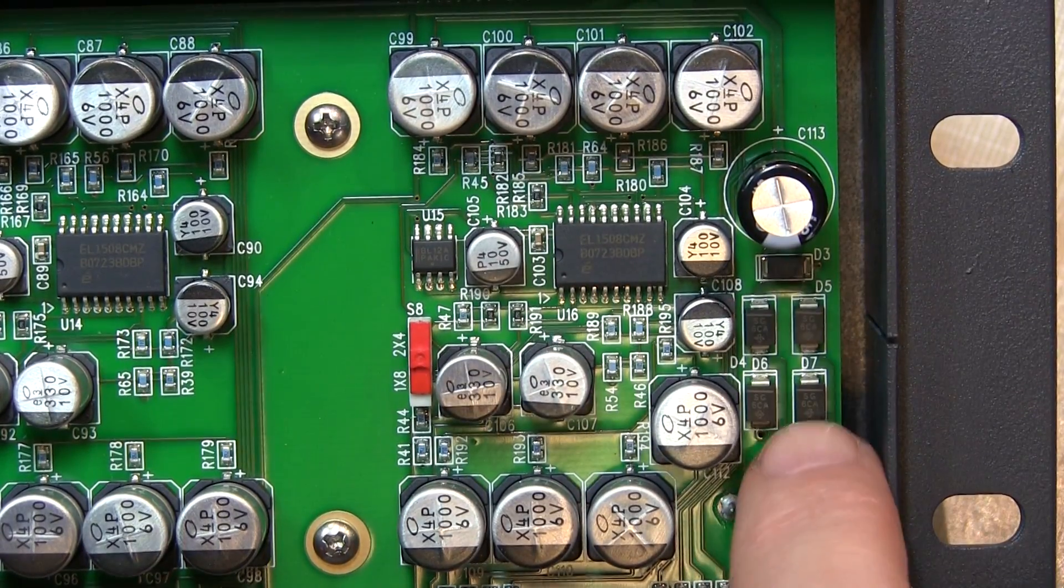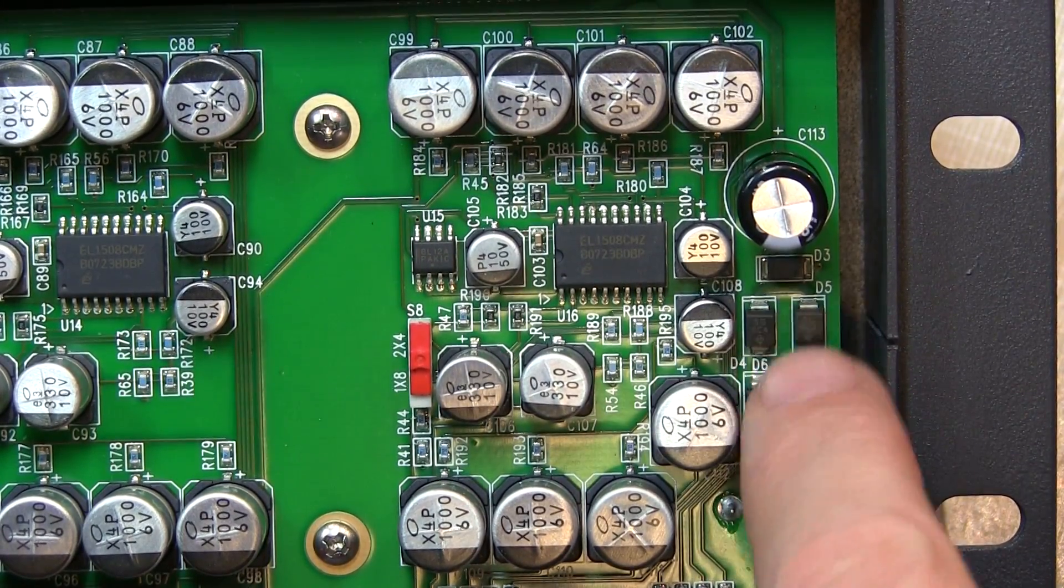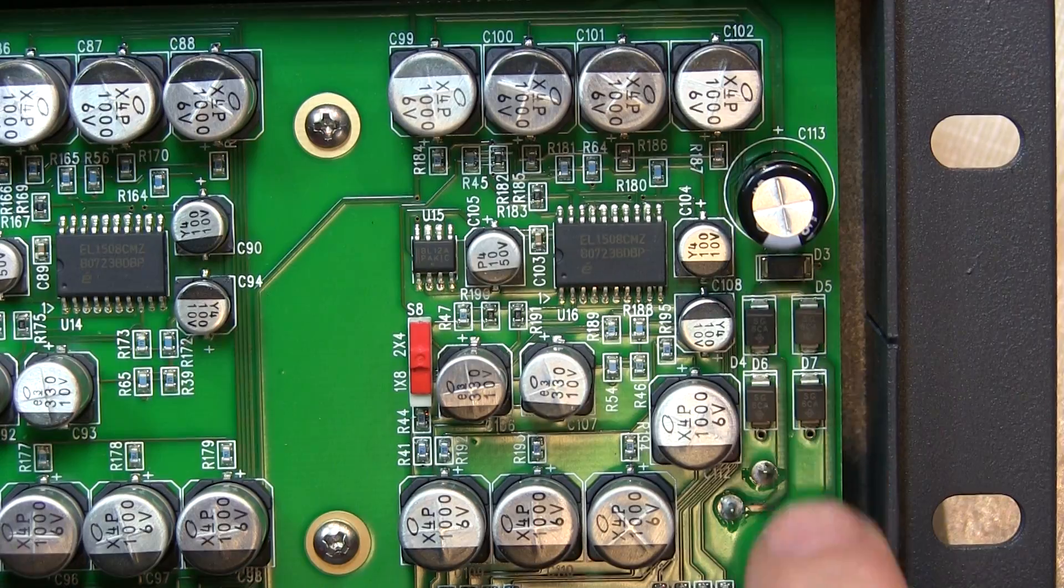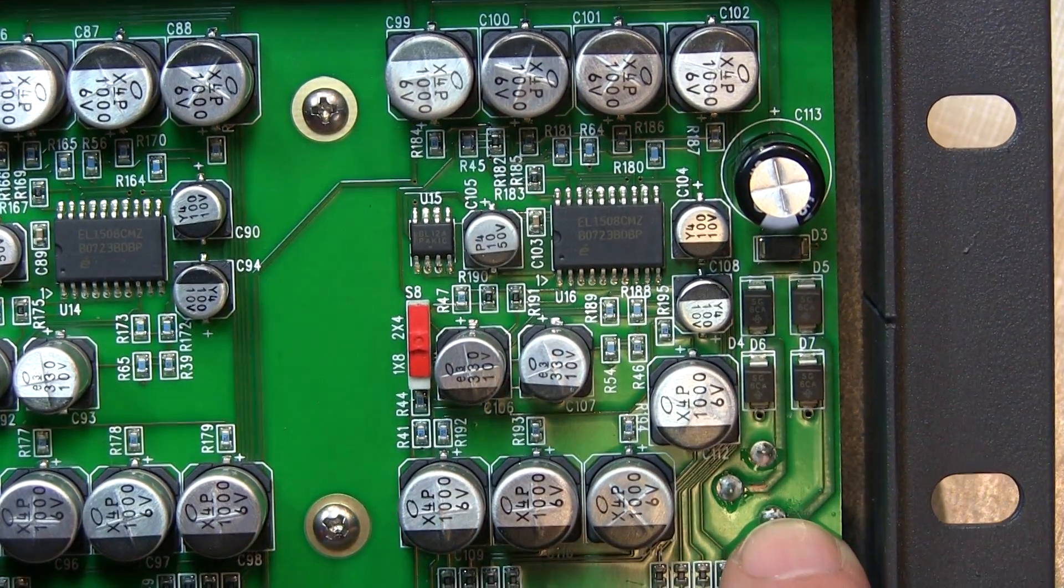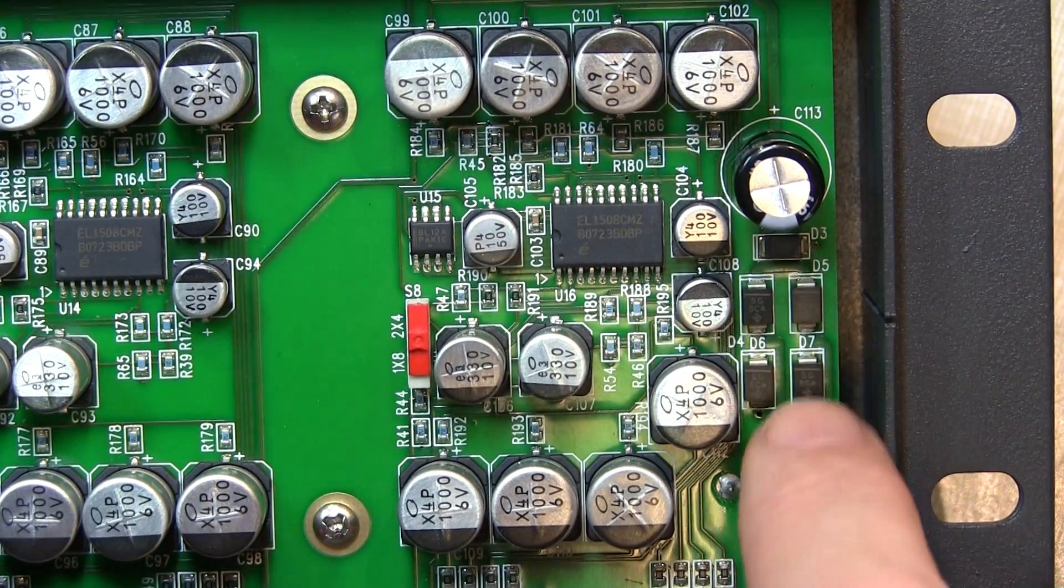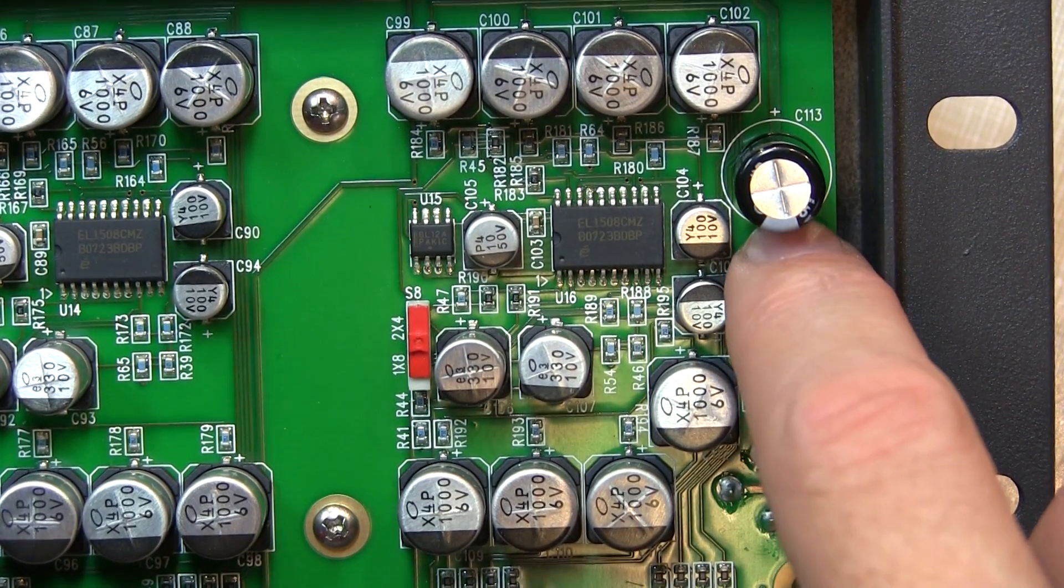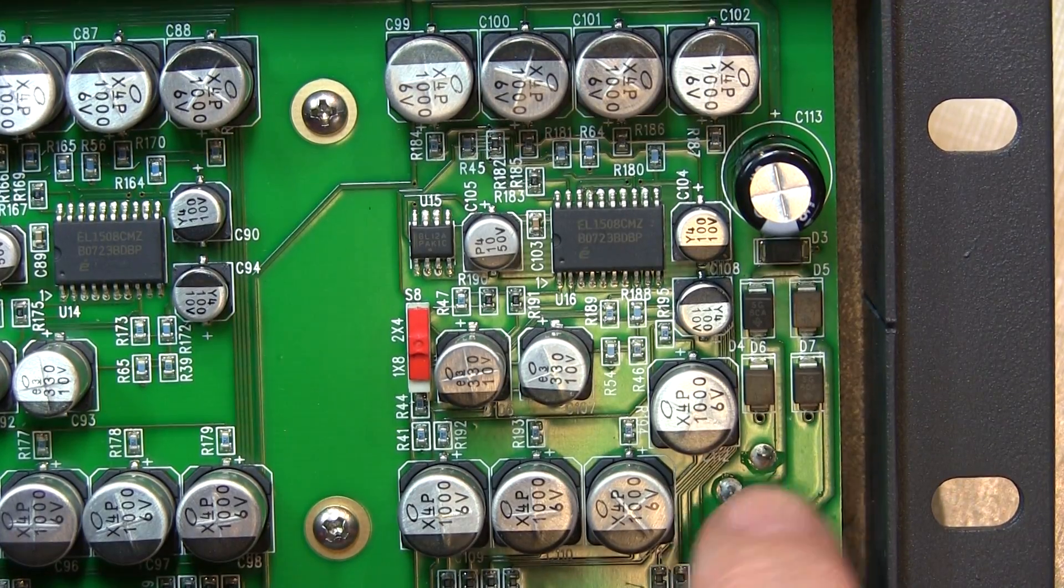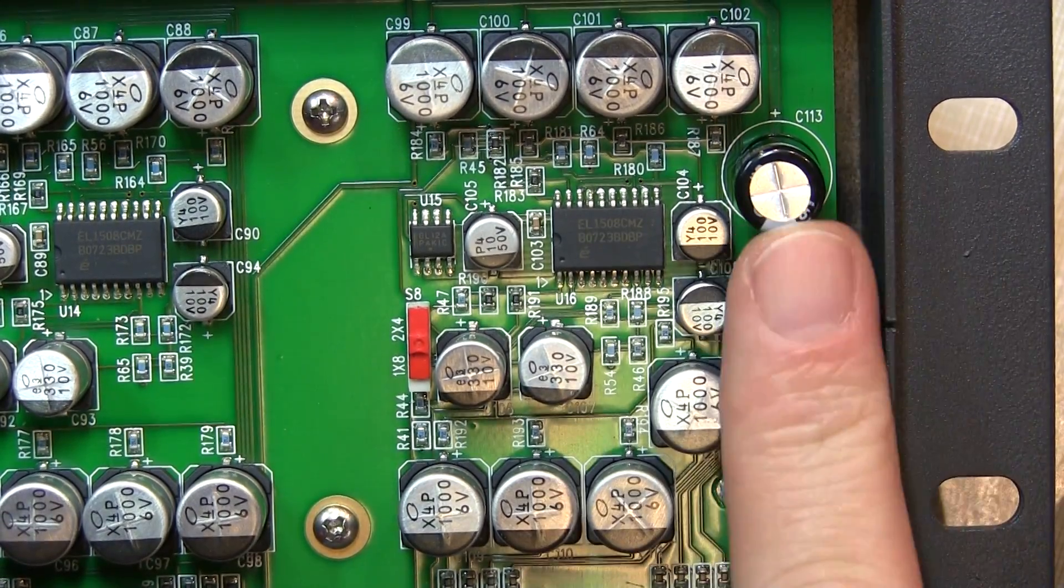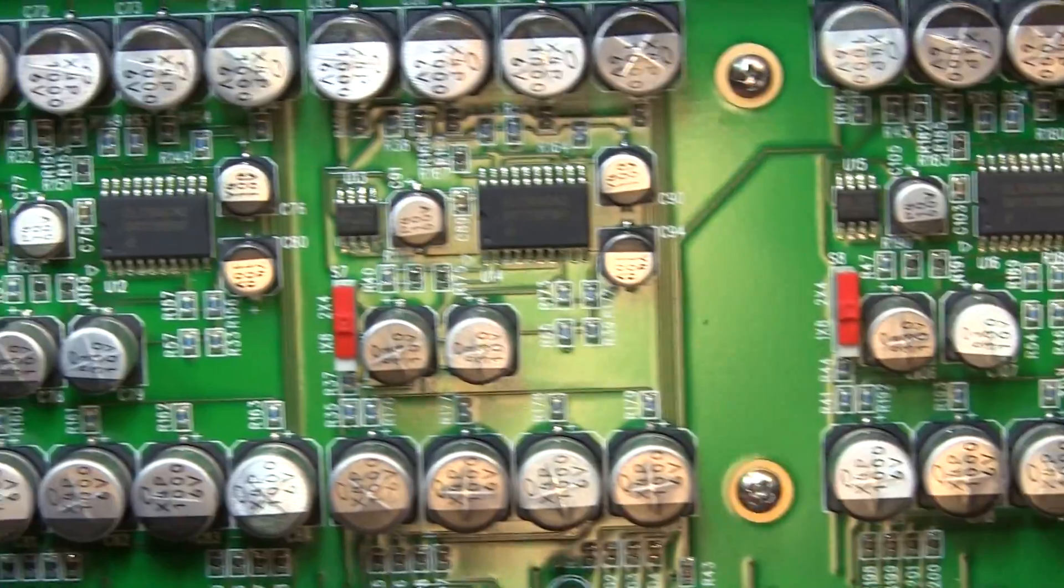And the only real difference is there's a full wave rectifier and extra filter cap at this end, which is where the power comes in. And the power can either be 12 volts AC, which would get rectified here and then sent off to all the sub-circuits, or you could put in 15 volts DC, and that would just pass through the bridge. So if you ignore that, the rest of these circuits are identical.